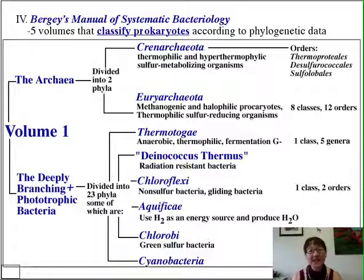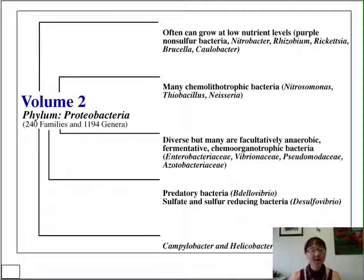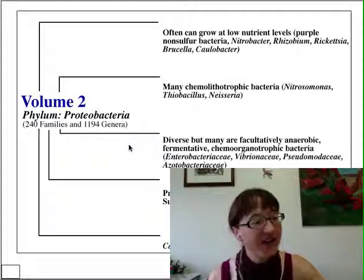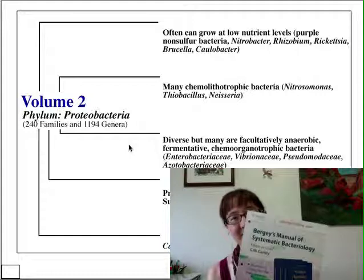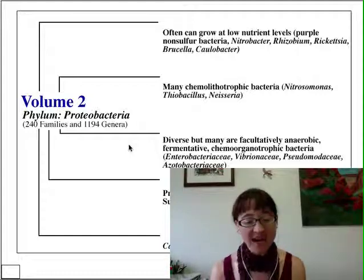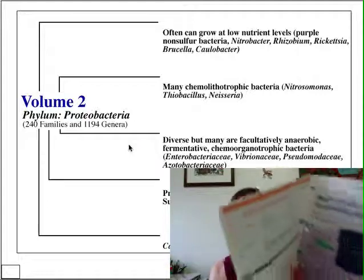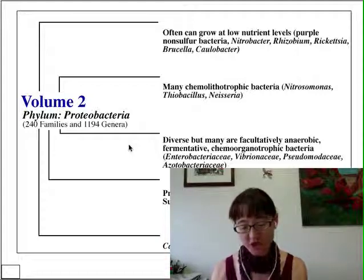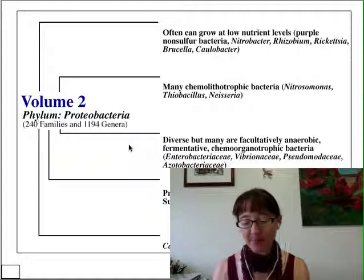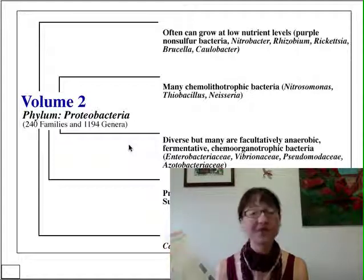Volume two is devoted to the Proteobacteria. I've had to adjust the number of families and genera since it went to press — it's that trendy. The Springer advertisement for Bergey's Manual volume two tells us it's three books: Part A is introductory essays; Part B is devoted to the Gammaproteobacteria; and Part C covers the Alpha, Beta, Delta, and Epsilon Proteobacteria. As volume two went to press, the taxonomy encompassed 6,466 species — all yours for the bargain price of $396.